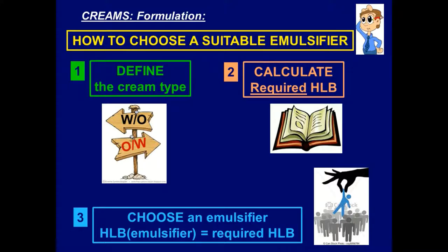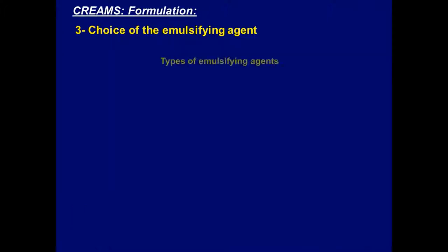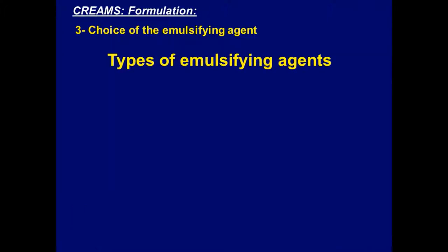The step that matters is how to choose an emulsifier among different emulsifiers. In our previous example in last lecture, we were restricted to only three emulsifiers. But in real life, there are many different emulsifiers and you should pick a suitable one. To choose an emulsifier, you have to know the types of emulsifying agents.